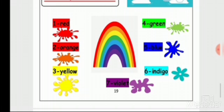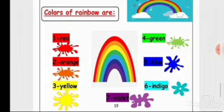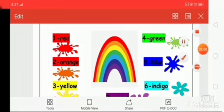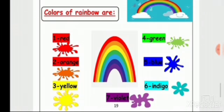Number one is red, number two is orange, number three is yellow. Say with me: red, orange, yellow. After yellow, number four is green. Number five is blue.